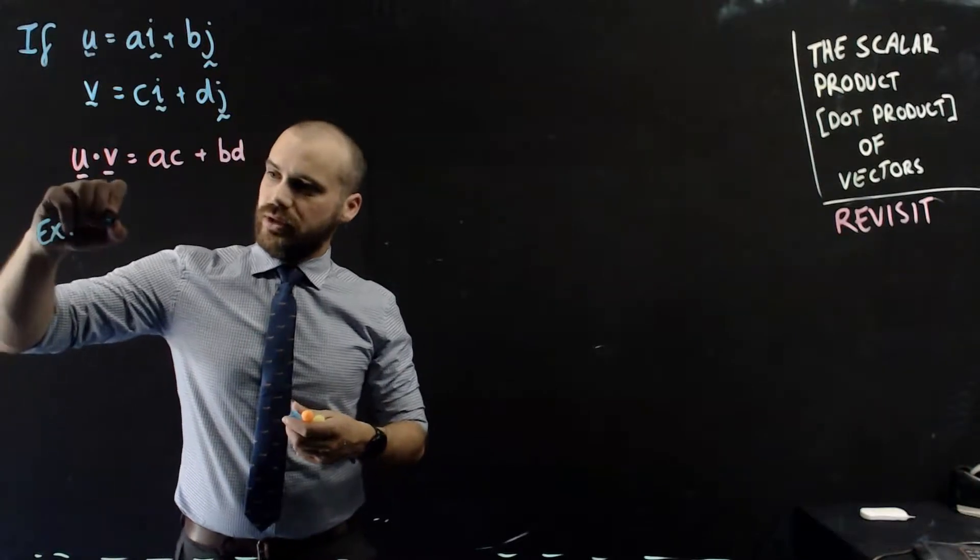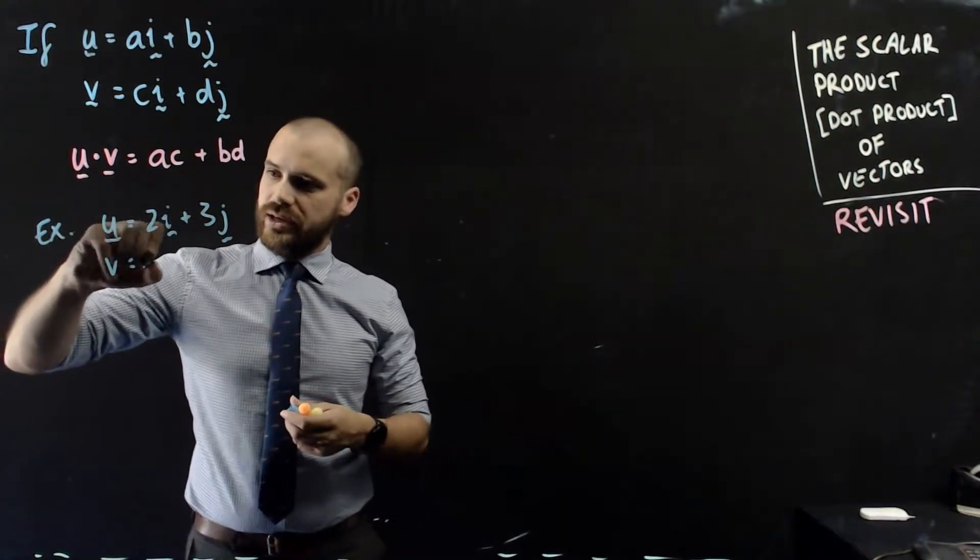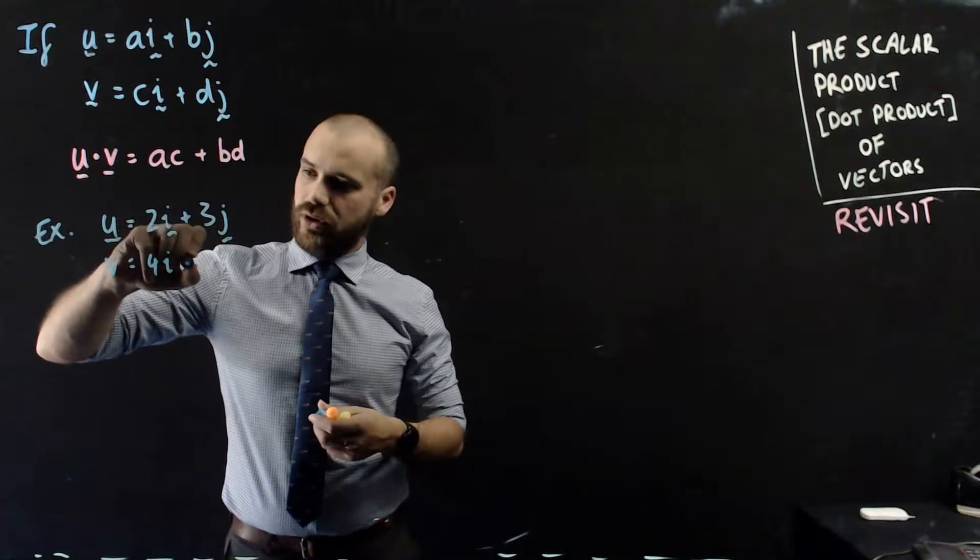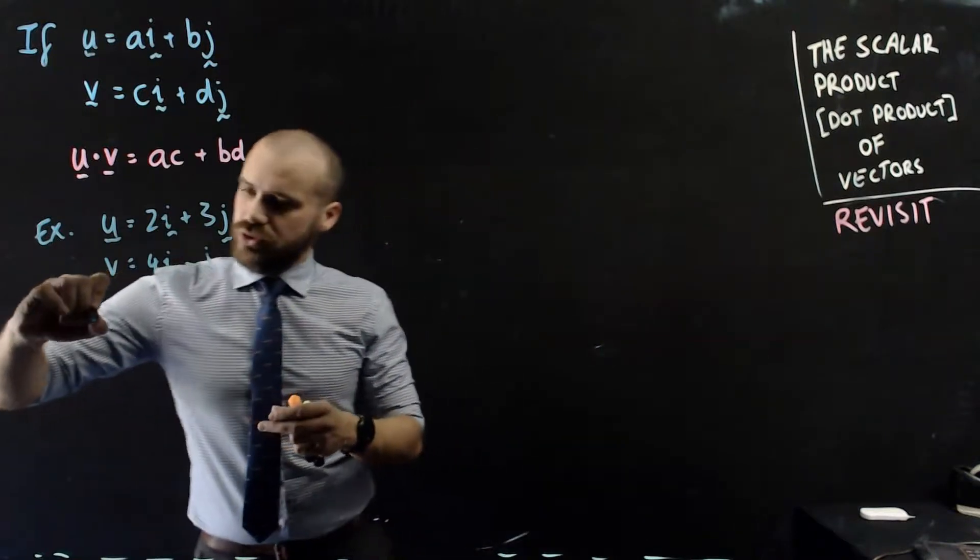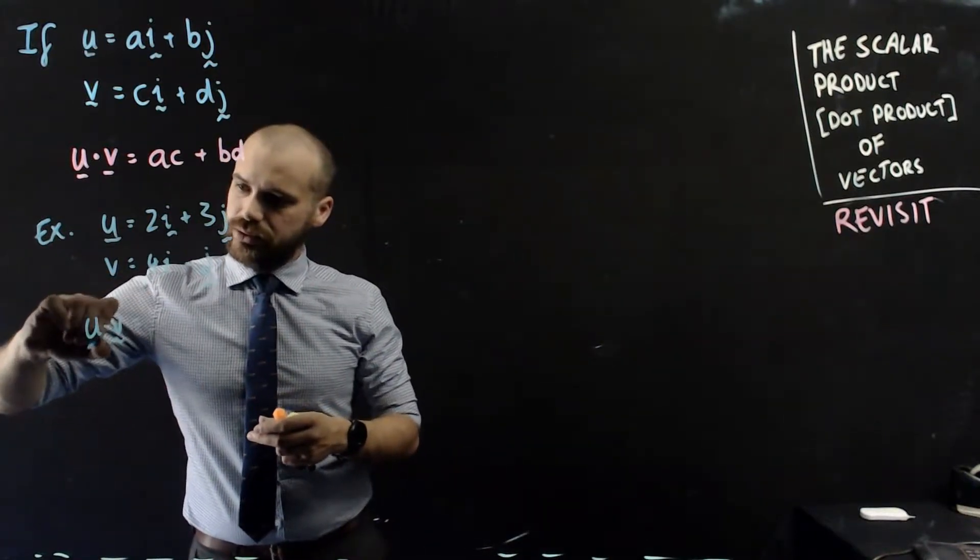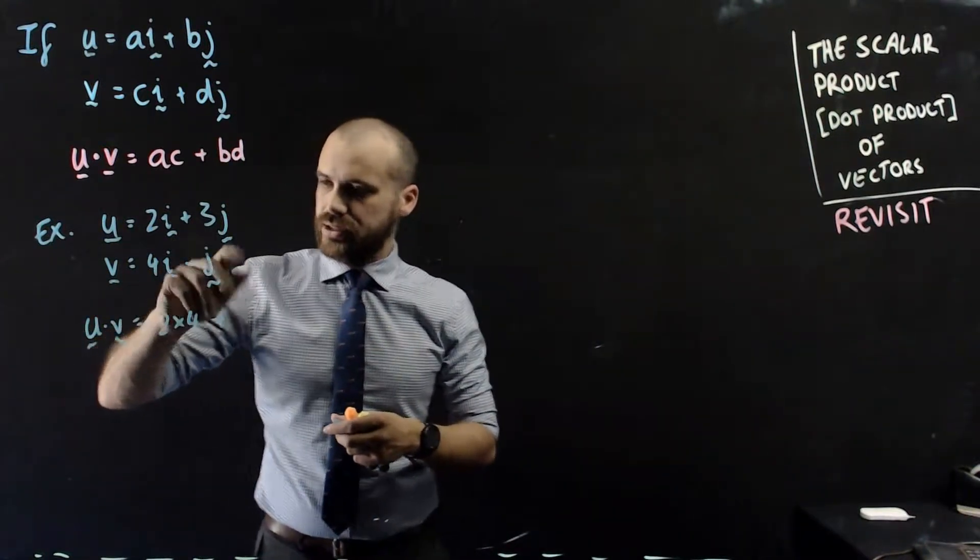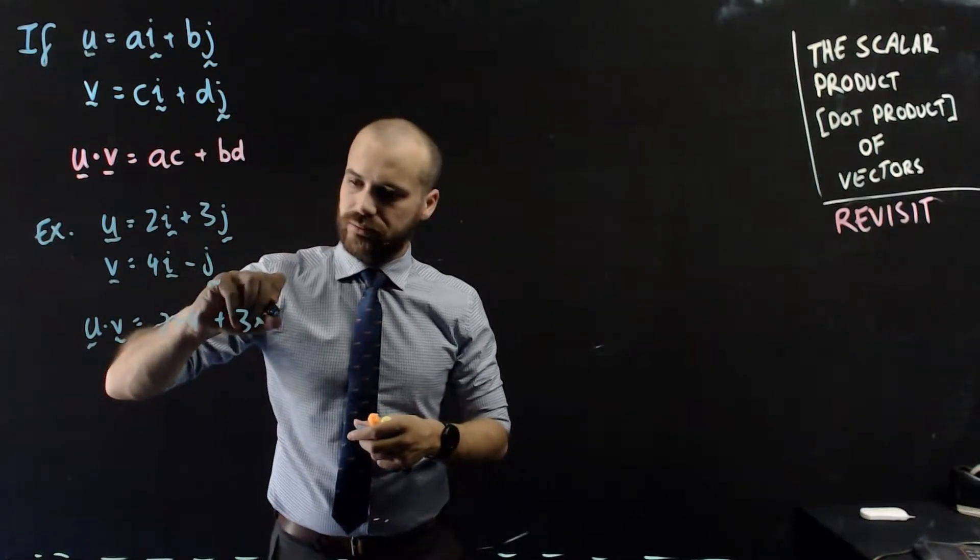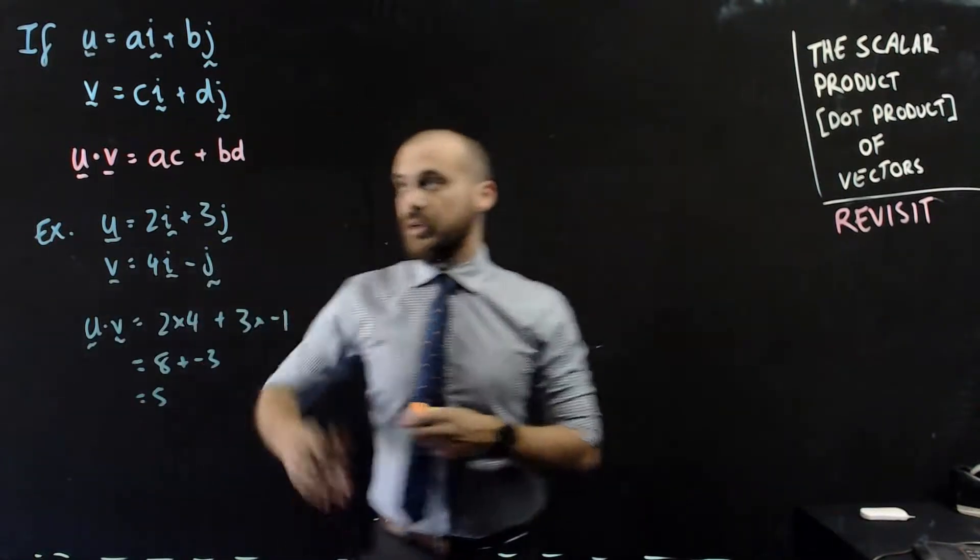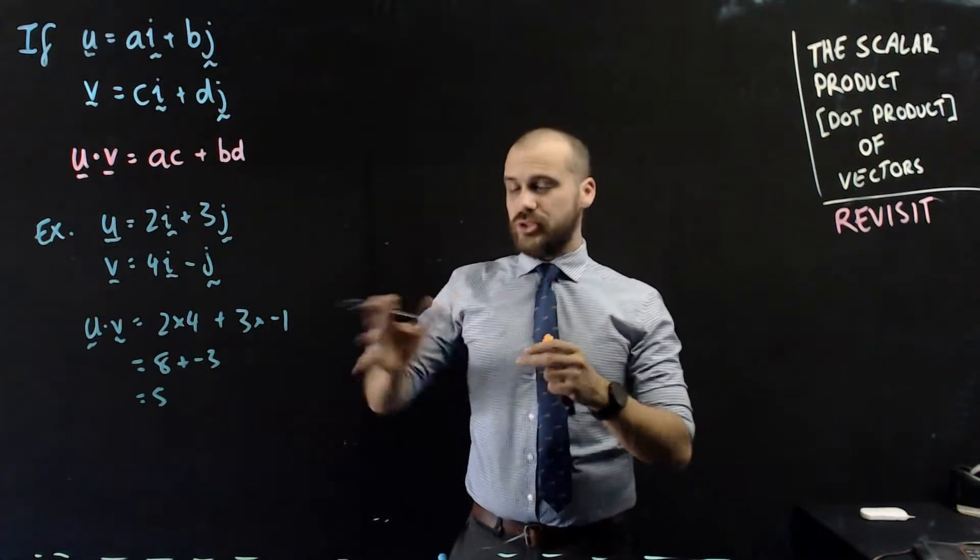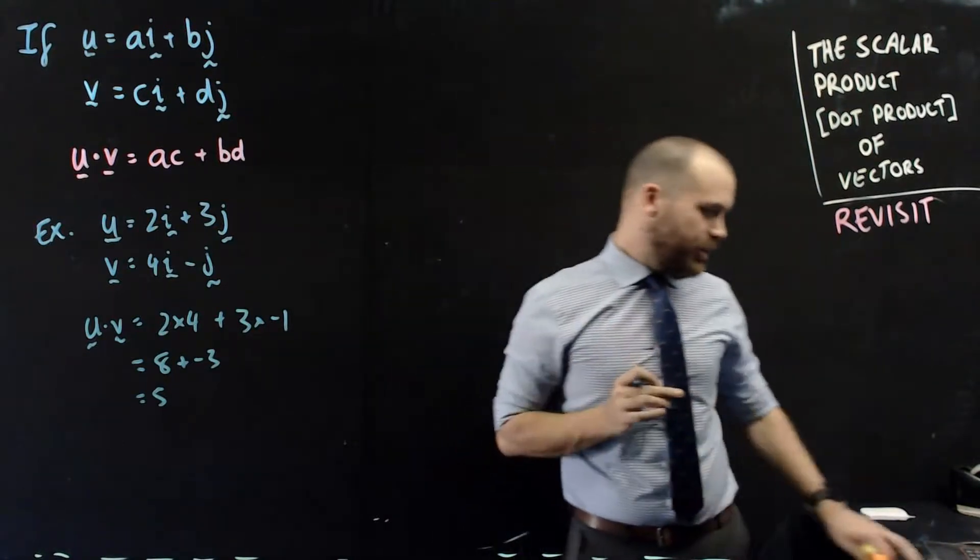For example, if u equals 2i plus 3j and v equals 4i minus j, then u dot v will be equal to 2 times 4 plus 3 times negative 1, which is 8 plus negative 3 which is 5. There is our first look at the dot product. We've done that before.